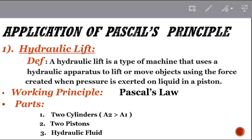Hydraulic lift definition: A hydraulic lift is a type of machine that uses a hydraulic apparatus to lift a device using the force created when pressure is exerted on a piston.